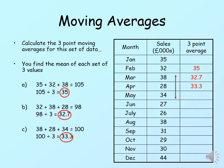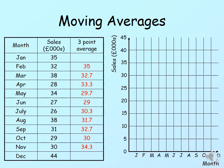I'm going to move on now — five, four, three, two, one. I'm simply going to give you the answers, and hopefully you have frozen the screen and calculated them so you can check your answers against mine. The remaining values come to: 29.7, 29, 30.3, 31, 32.7. That is our final one.